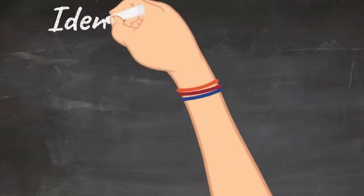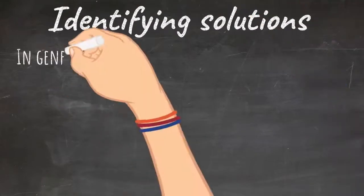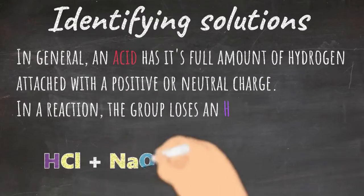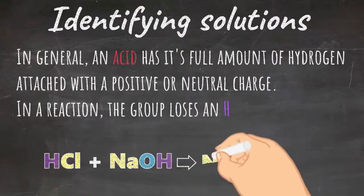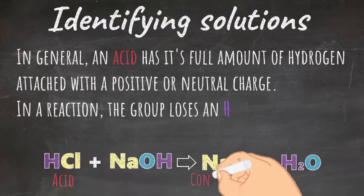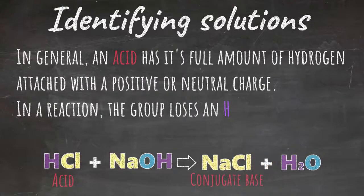There are some easy ways to identify solutions. In general, an acid has its full amount of hydrogen attached with a positive or neutral charge. If you're given a reaction, the acidic group will lose a hydrogen, and it will be an acid to base reaction. Below, you can see that there is hydrochloric acid, which is stomach acid, given with HCl.